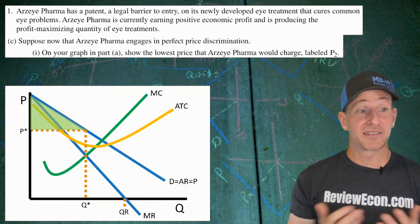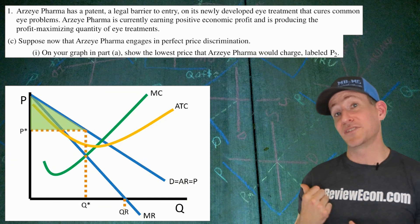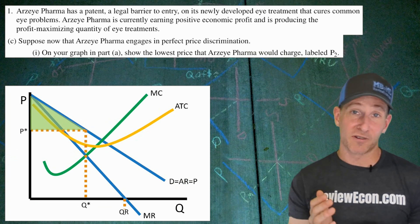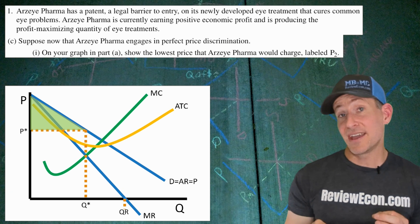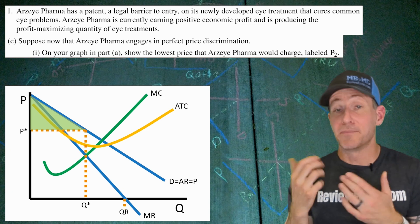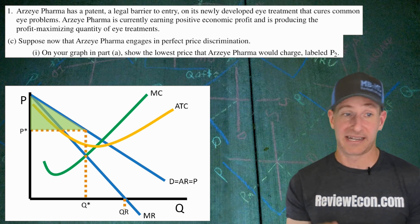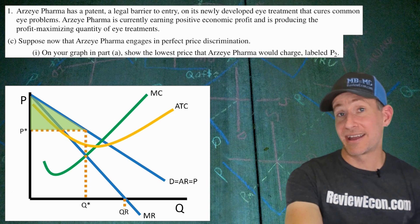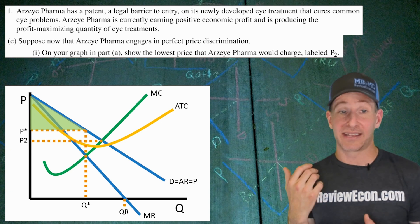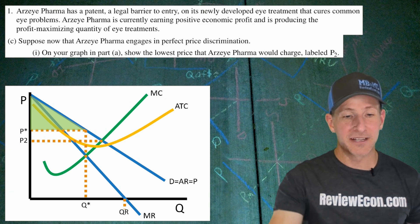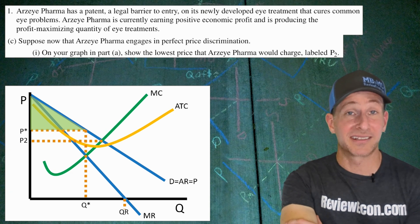Now we're assuming that Arzea Pharma engages in perfect price discrimination. Remember, when they do that, the marginal revenue curve disappears, and the downward-sloping demand curve becomes both the demand and marginal revenue curve. They produce at the demand equals marginal cost point. So I'm going to label that price as P2 — it's at the demand equals marginal cost point, and that's the price of the last unit if they perfectly price discriminated.